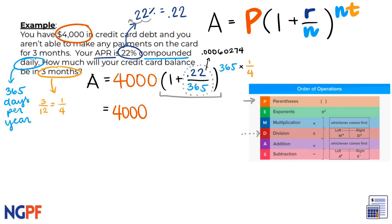Now that we have completed the division in the parentheses, we can now add the 1 within the parentheses, which gives us 1.00060274. To continue simplifying our equation, we can calculate 365 times one-fourth gives us 91.25 for our exponent.